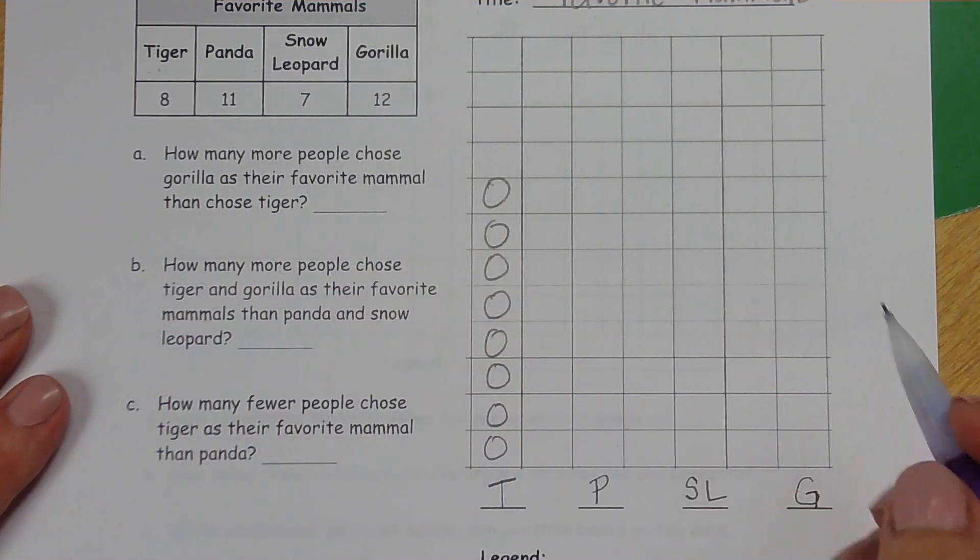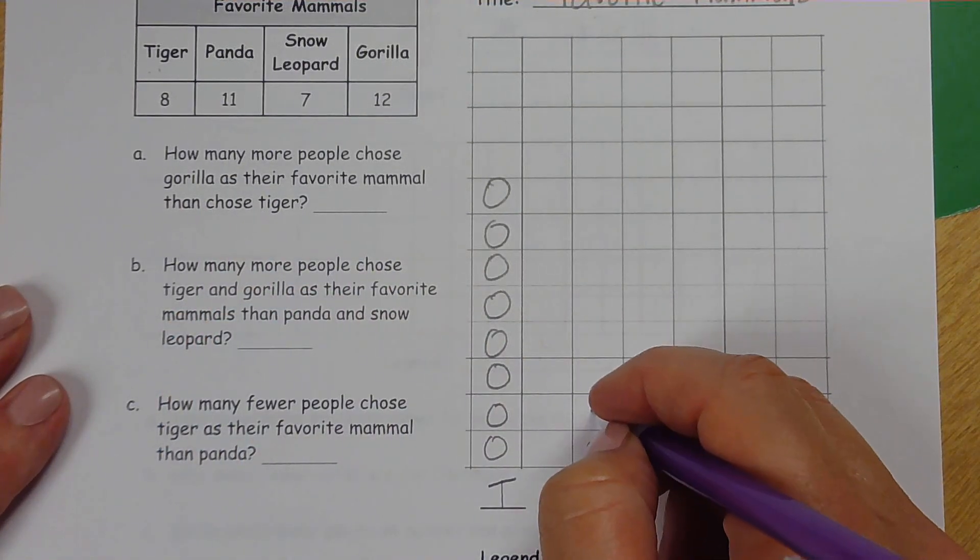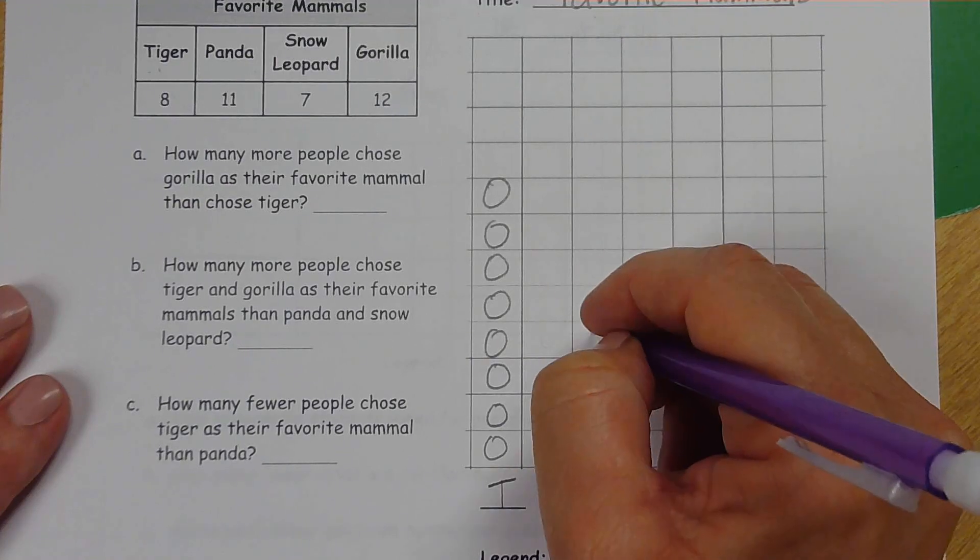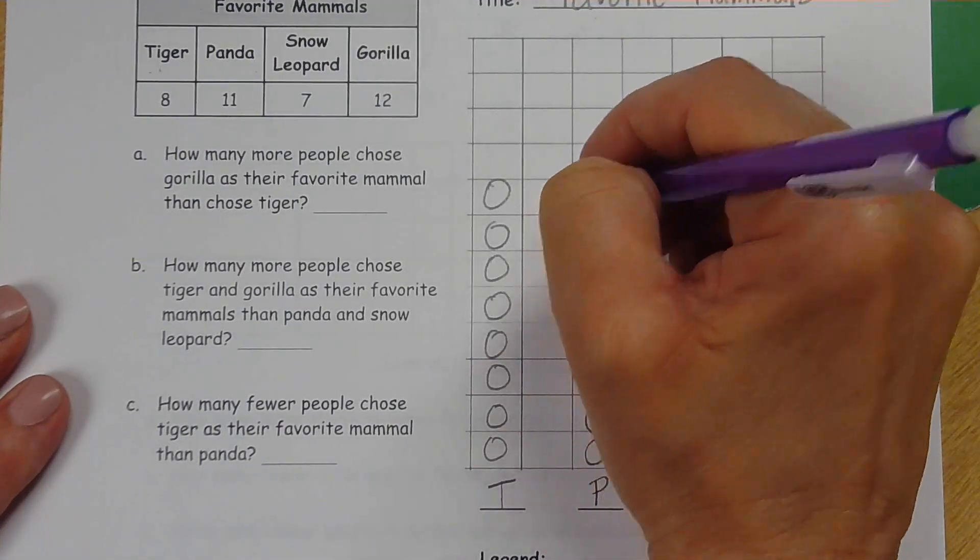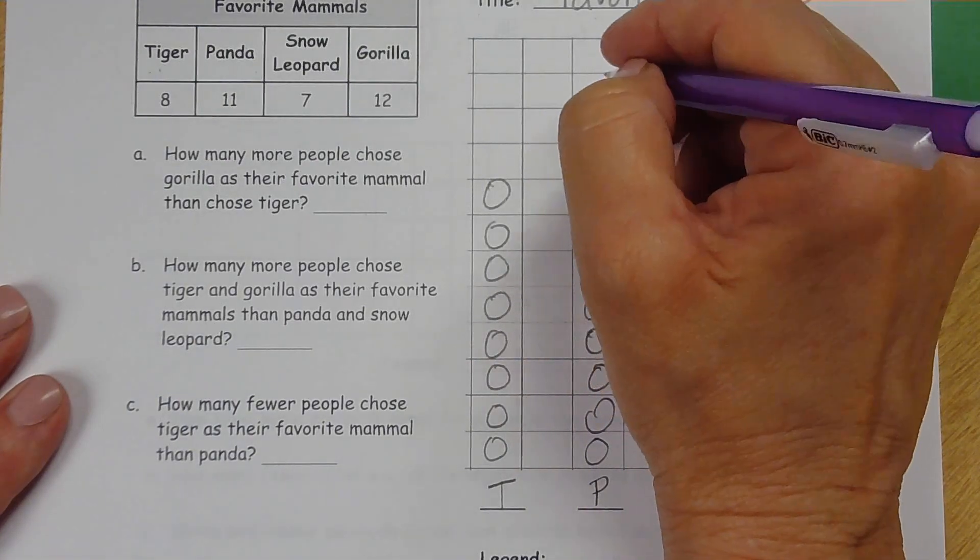The panda has 11: one, two, three, four, five, six, seven, eight, nine, ten, eleven.